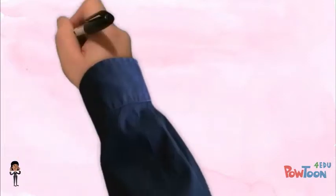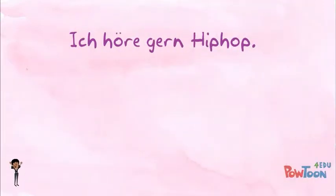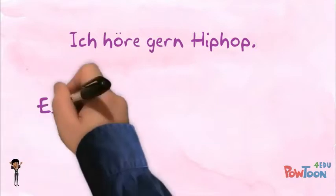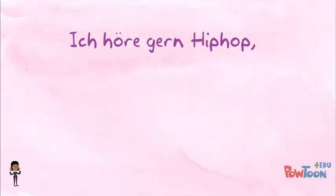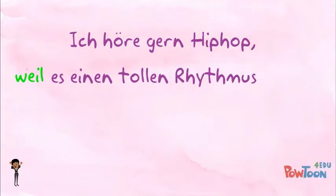Let's look at another example. Ich höre gern Hip Hop — I like listening to hip hop. Es hat einen tollen Rhythmus — it has a great rhythm. Let's try combining these with weil, meaning 'because.' The beginning stays the same: Ich höre gern Hip Hop, and then we insert a comma. The verb in the second clause is hat, and this needs to be sent to the end, so it becomes: weil es einen tollen Rhythmus hat. I like listening to hip hop because it has a great rhythm.